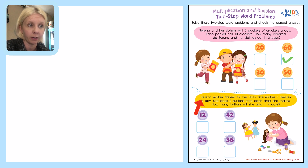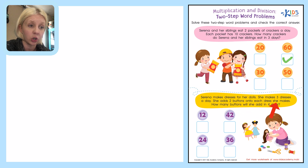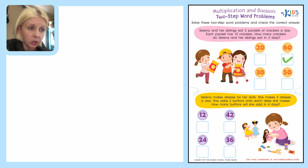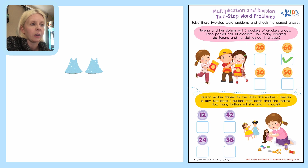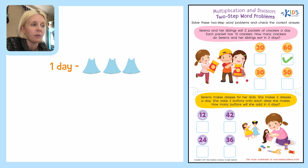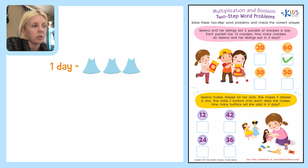Let's go down to the next one. Great job on that first one! This one says: Serena makes dresses for her dolls. She makes three dresses a day. She adds two buttons onto each dress she makes. How many buttons will she add in four days? Let's figure it out. She makes three dresses a day, so let's come over here and draw out three dresses — one, two, and three. She makes that in one day, so I'm going to write that out to the side. For one day she makes three dresses. She adds two buttons onto each dress she makes, so each one of these dresses is going to have two buttons.